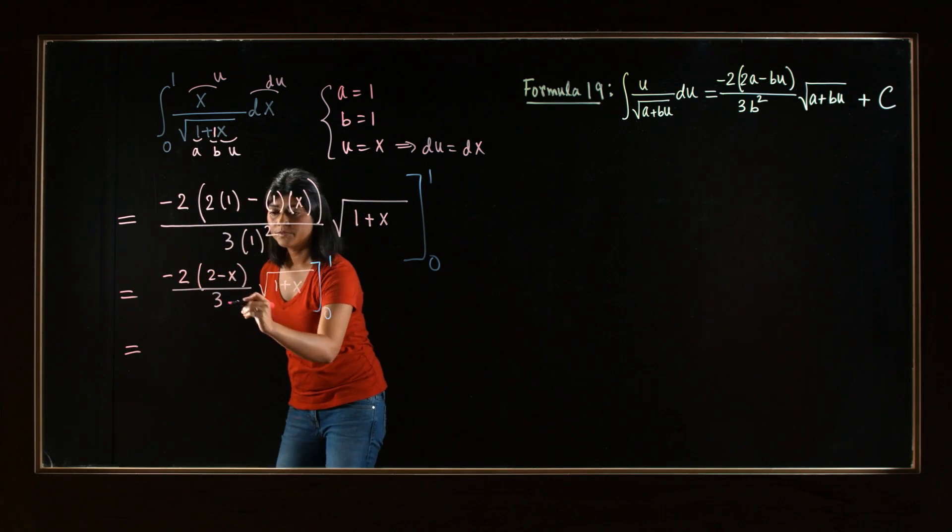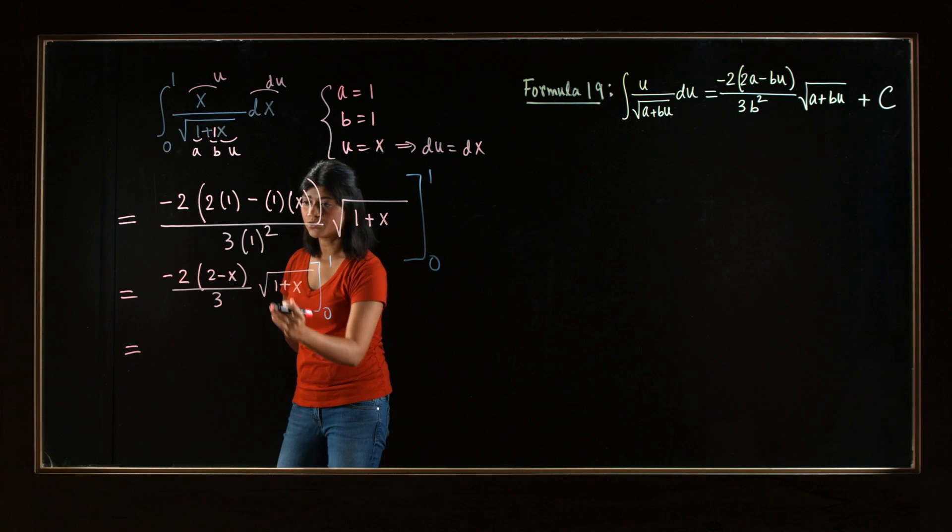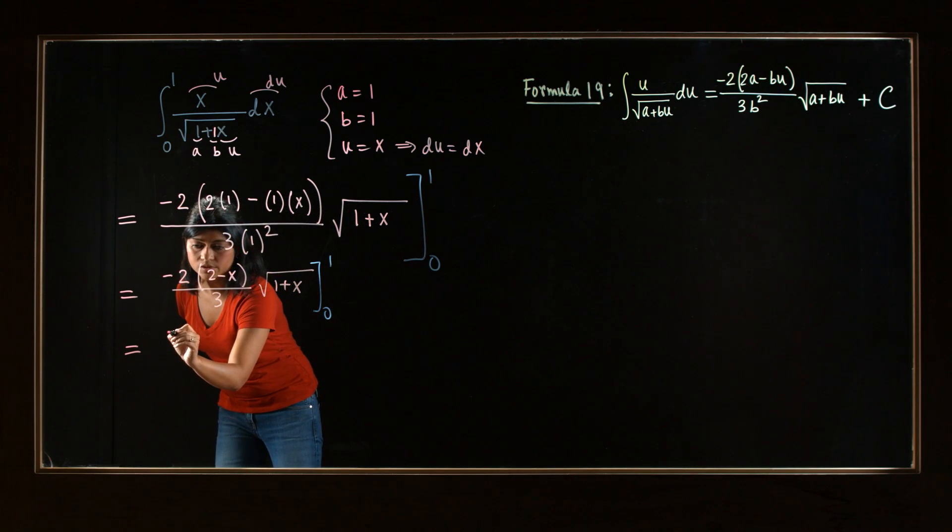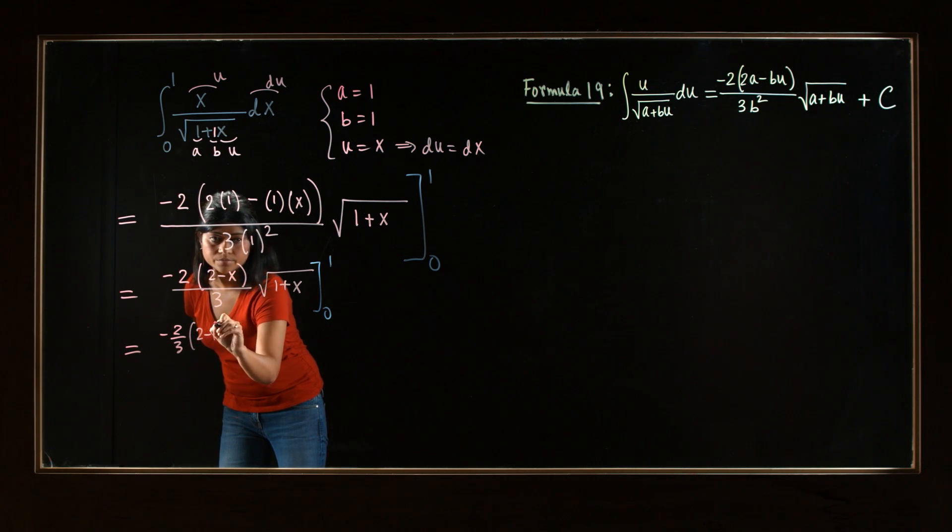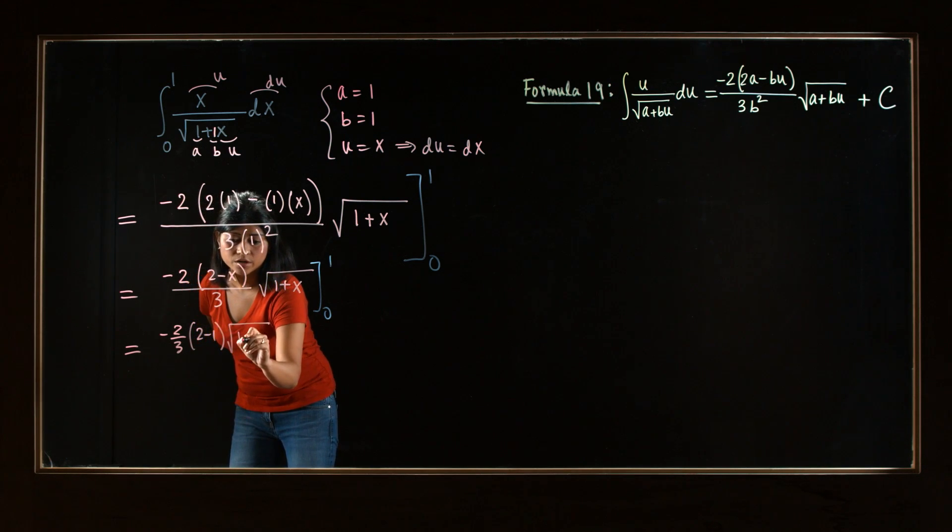So plug in 1 first for x. And then, we'll plug in 0. So let's see, negative 2 3rd, 2 minus 1, square root 1 plus 1.